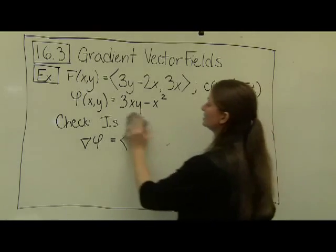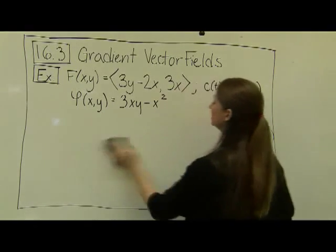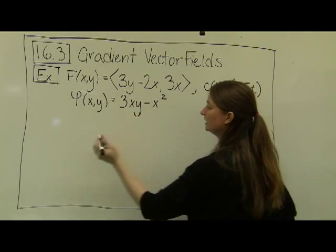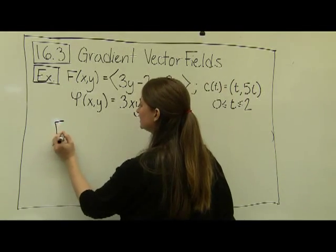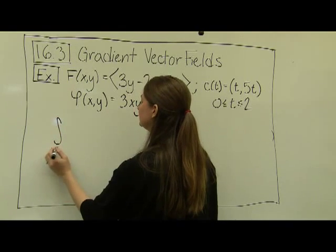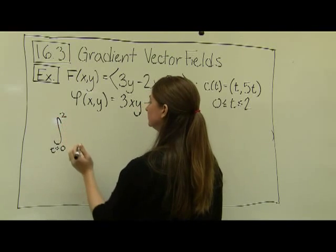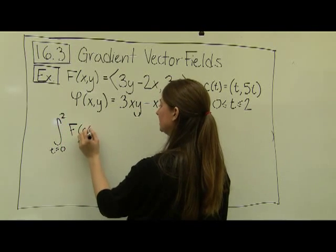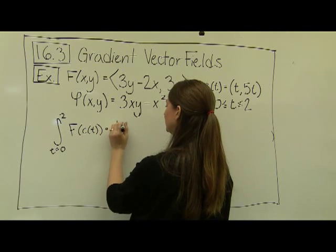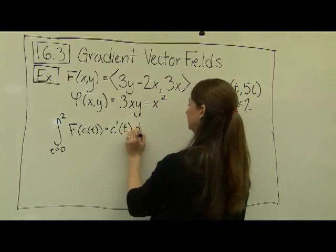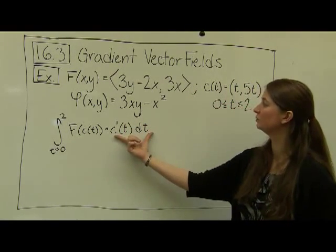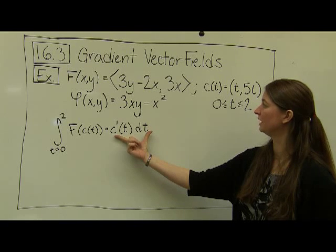Now we want to compute the line integral, and we'll do it two ways to compare answers. The vector line integral is the integral from t equals 0 to 2 of F(c(t)) dotted with c'(t) dt. This is our old-fashioned way of computing the line integral from section 16.2.